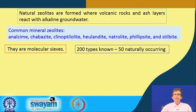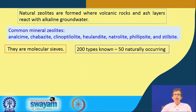We see that a large number of this sort of zeolites are known in the literature. 200 types are basically known and out of those 200 types, 50 are naturally occurring. So we can have a very big source of naturally occurring zeolite materials.